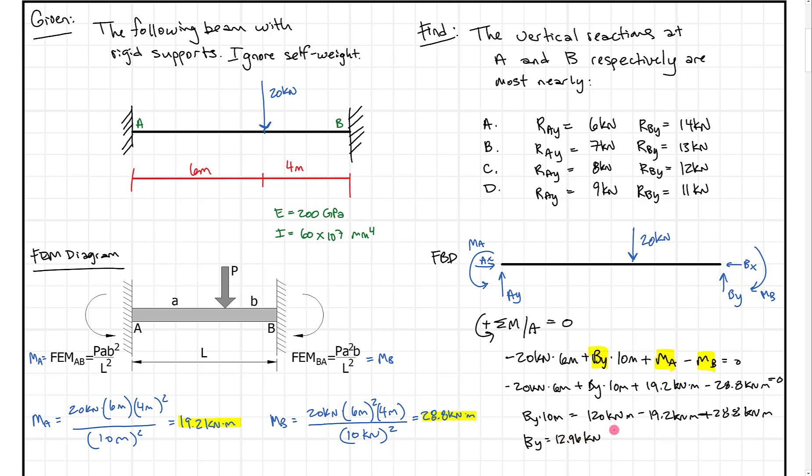So that's our answer - we can box that in. We can look and see that once we know one, we should be able to solve this. When we come up here, we get our answer: 13 kilonewtons and 7 kilonewtons.